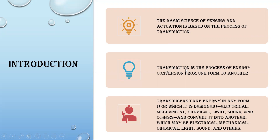How does this process take place? For the sensing process, we use sensors; for the actuation process, we use actuators. For the conversion of energy, the process is called transduction. The device used for converting one form of energy to another form of energy is known as a transducer. Electrical energy, mechanical energy, light energy, chemical energy — whatever kind of energy can be converted into any other opposite form of energy.